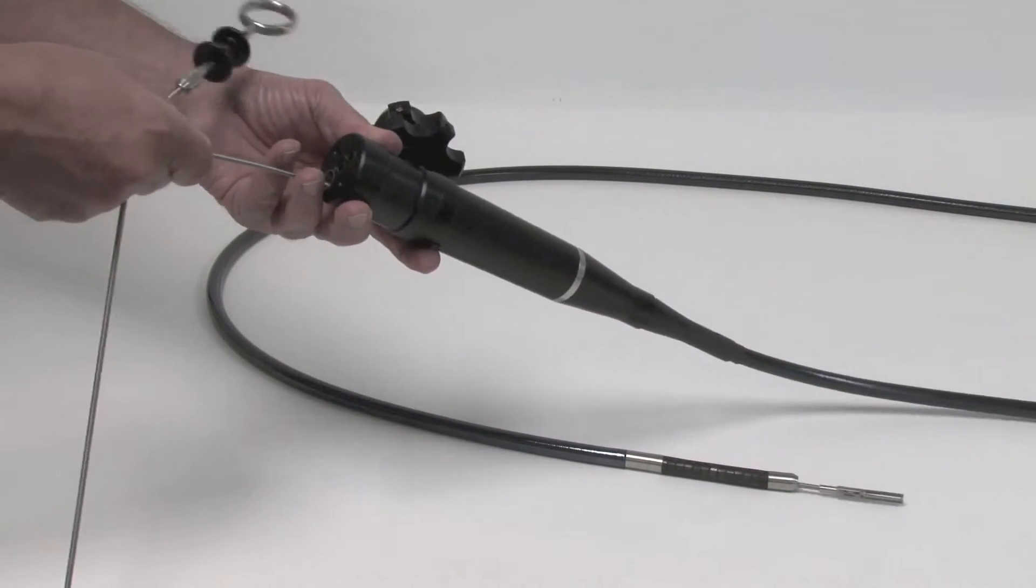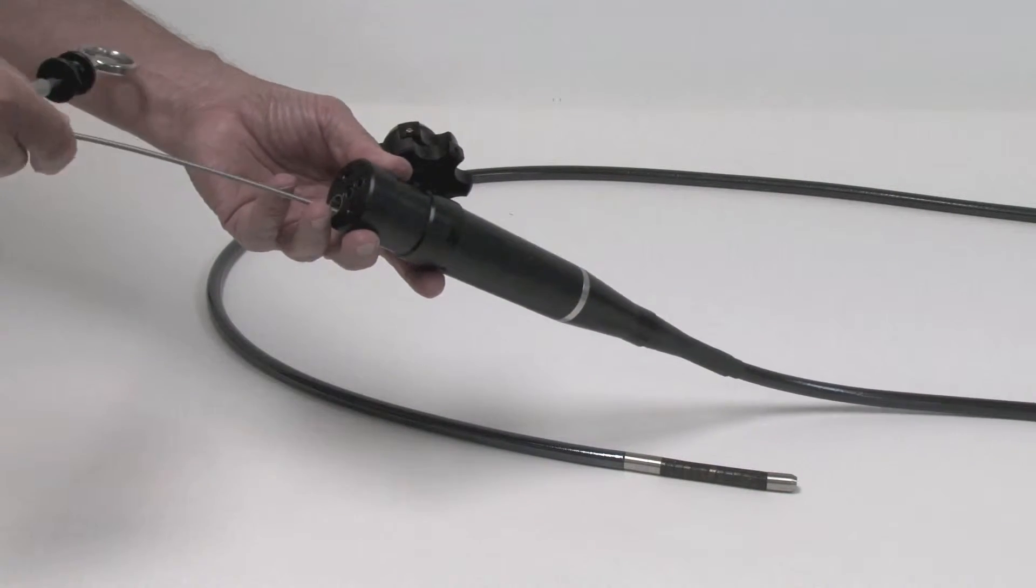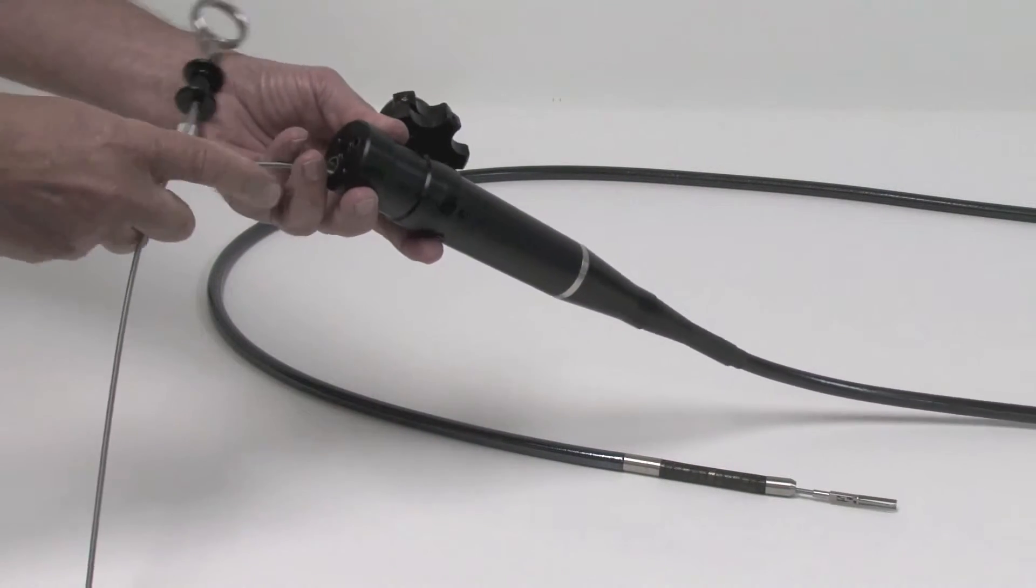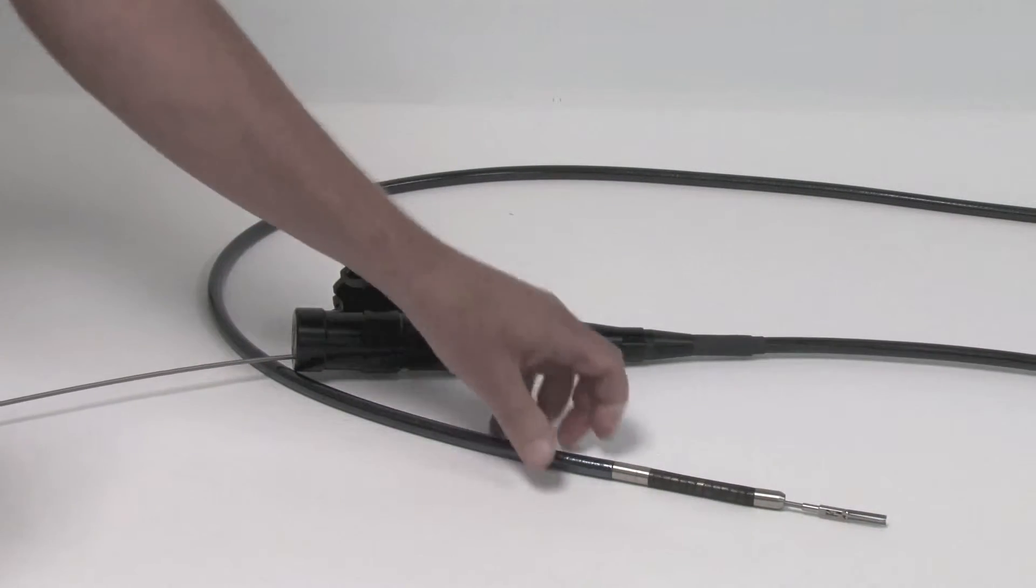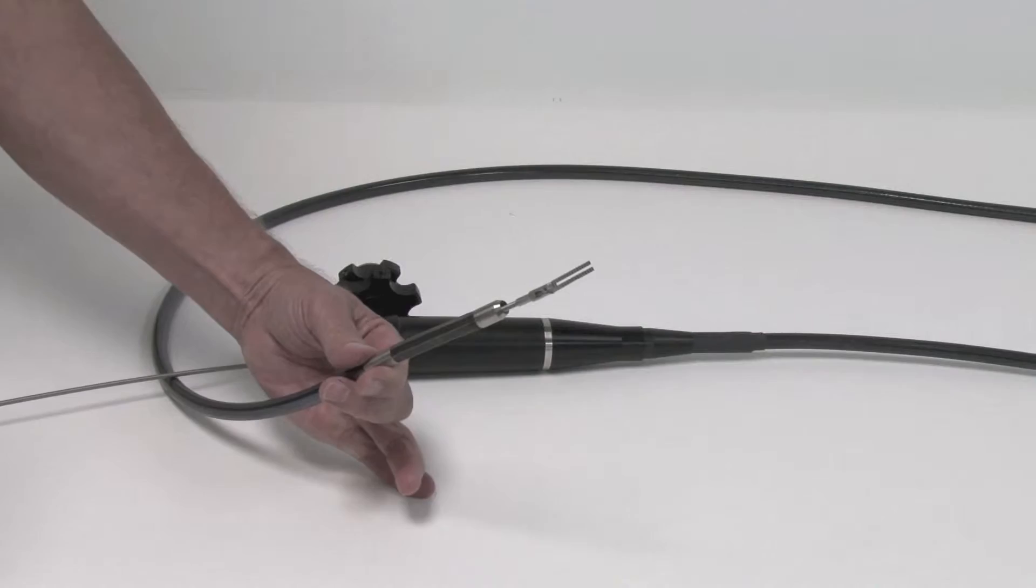And a little bit of resistance. There you go. So as you see, I met a little resistance. Instead of forcing it, I just gave it a little wiggle and it found its way through. And here we see that tool coming out the distal tip. And it still has the ability to do its job.